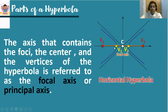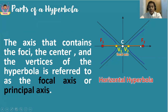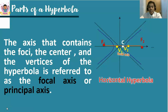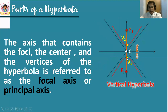The axis that contains the foci, the center, and the two vertices of the hyperbola is referred to as the focal axis or the principal axis. Notice that the focal axis is longer than the transverse axis, because the transverse axis is only the distance from v-sub-1 to v-sub-2, but the focal axis is the distance from focus to focus. On a vertical hyperbola, the focal axis is a vertical line and is still longer than the transverse axis.